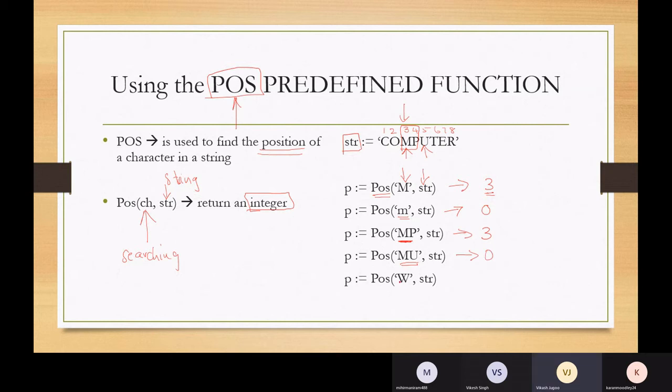Let's search for W. Well, that's an easy one. There is no W and that will return a value of 0.